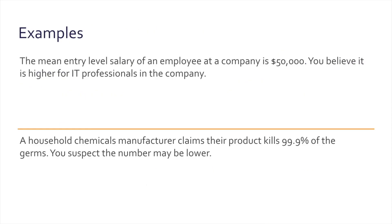Let's take a look at some examples. The mean entry-level salary of an employee at a company is $50,000, and you believe it is higher for IT professionals in the company. The null hypothesis is that the salary is actually the same for IT professionals as for all other employees — $50,000 or perhaps less. However, the alternative hypothesis, which we are trying to prove, is that the salary is strictly higher than $50,000.